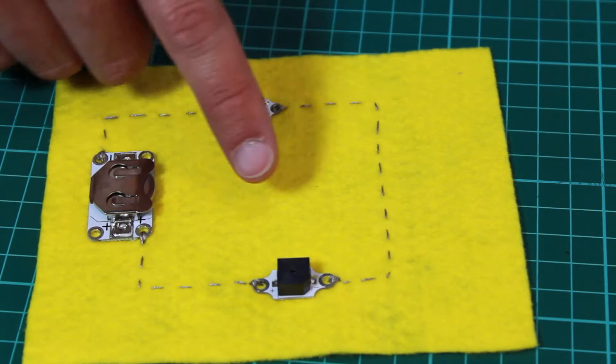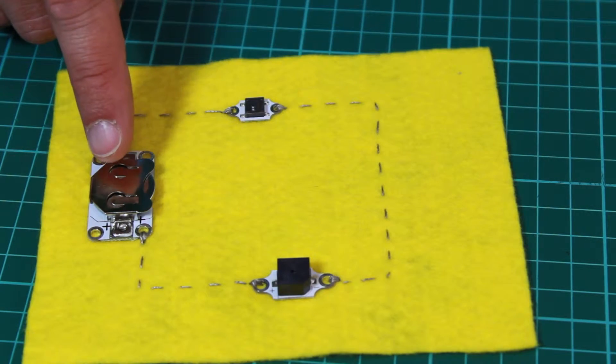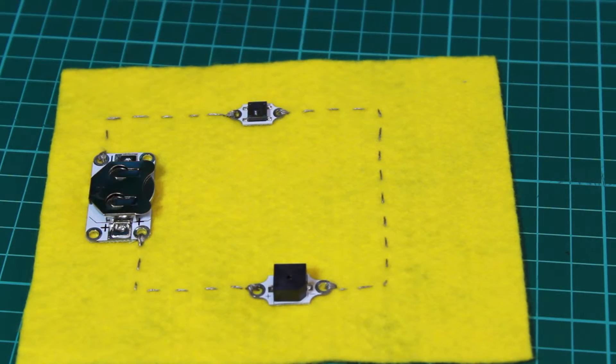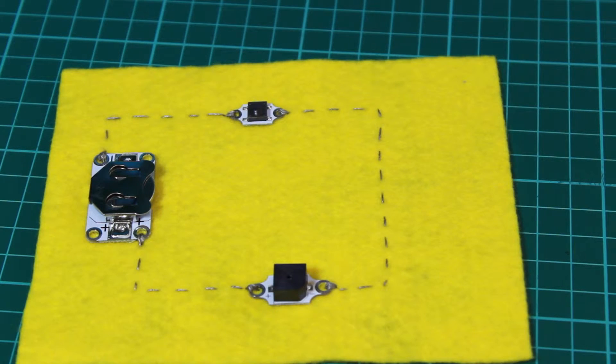So we have a very simple circuit here to demonstrate the buzzer. We've connected it to a coin cell power board via a momentary switch. When we press the switch, the buzzer sounds. So it's a very simple way of adding audio alerts to eTextiles circuits.